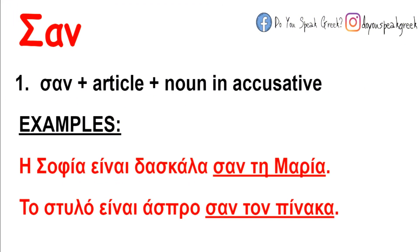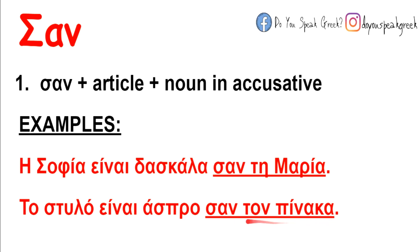Let's talk about σαν first. We use it before a noun in the accusative with the article. For example, η Σοφία είναι δασκάλα σαν τη Μαρία. The noun τη Μαρία is an accusative with the article. Another example: το στυλό είναι άσπρο σαν τον πίνακα. The noun τον πίνακα is a masculine noun in the accusative because it follows σαν.